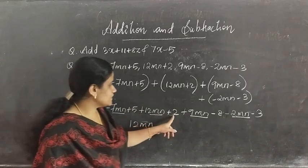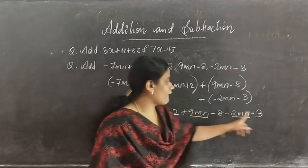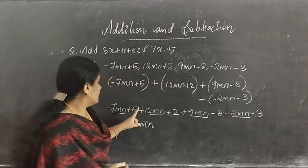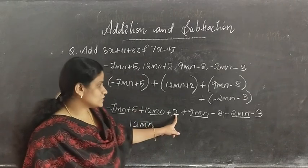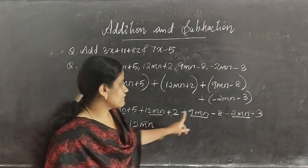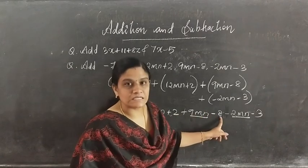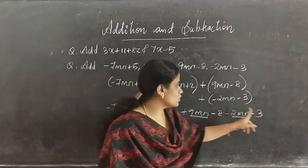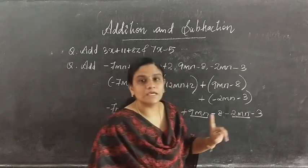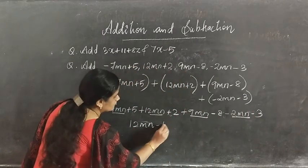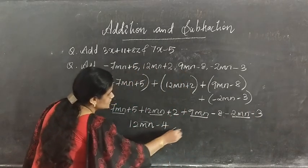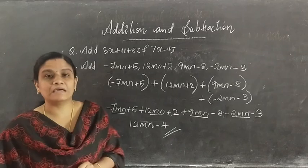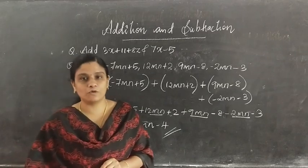All other terms are constants: 5 plus 2 is 7; 7 minus 8 is negative 1; negative 1 minus 3 is negative 4. So the sum is 12mn minus 4.